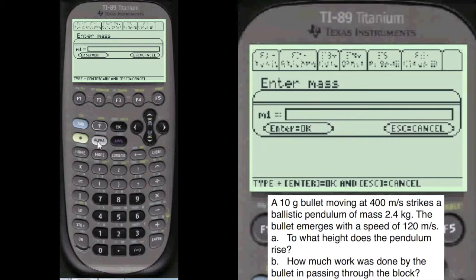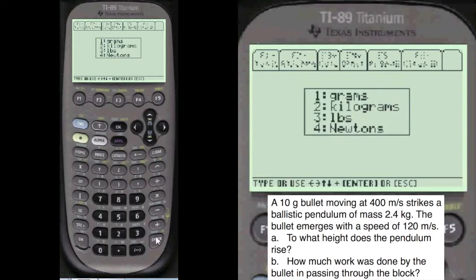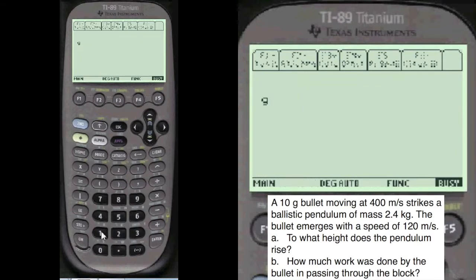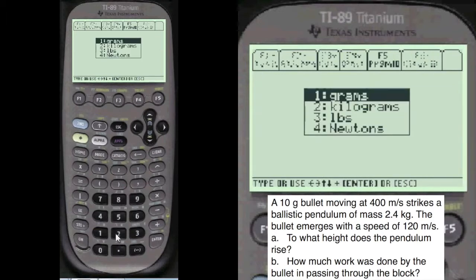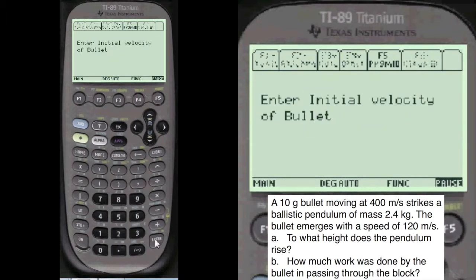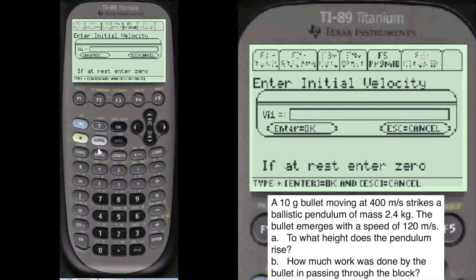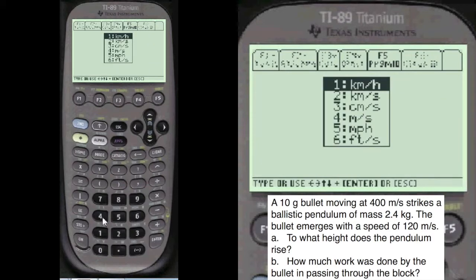Bullet's mass is alpha 10 grams. I do the conversions for you. The initial velocity is alpha 400 meters per second.